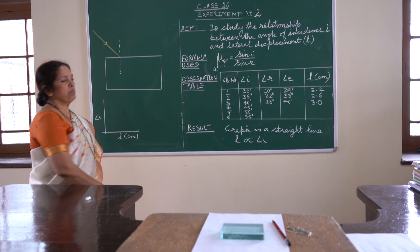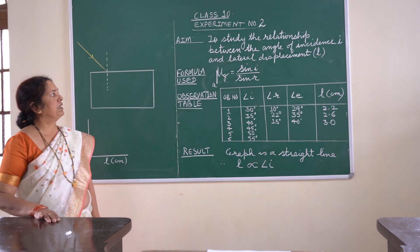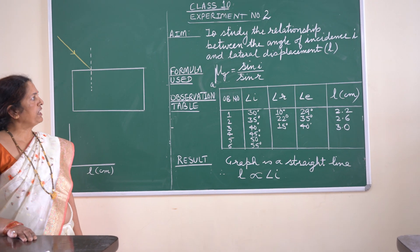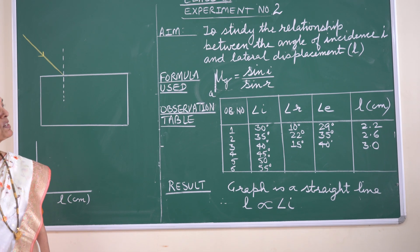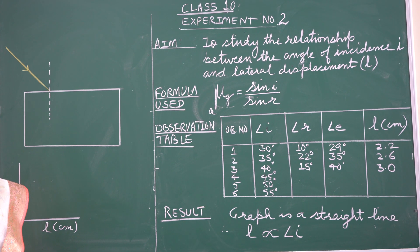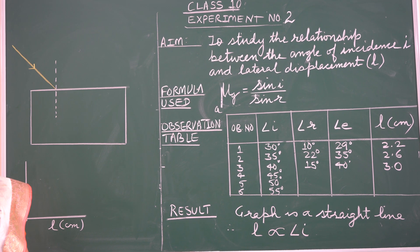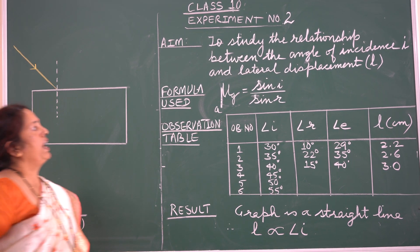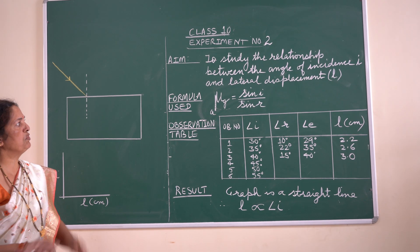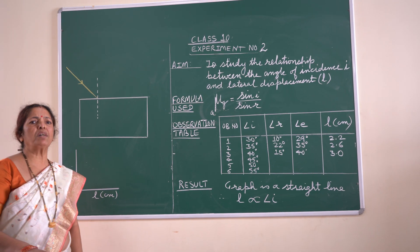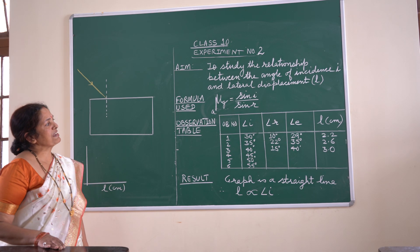The formula used is based on the refractive index of glass with reference to air, which can be written as: refractive index of glass equals sin i over sin r — where mu is the refractive index of glass with reference to air, sin i is the sine of the angle of incidence, and sin r is the sine of the angle of refraction. This formula is used to calculate the refractive index for the glass slab.